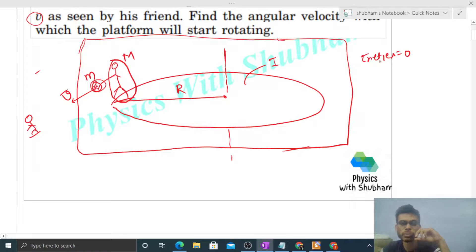So we can say net external torque acting on the system is zero, so we can conserve the angular momentum of the system about this axis. Now initial angular momentum will be zero because initially everything was stationary. Check the final angular momentum.